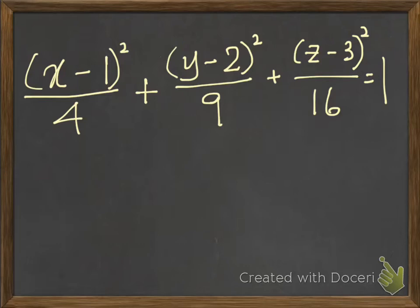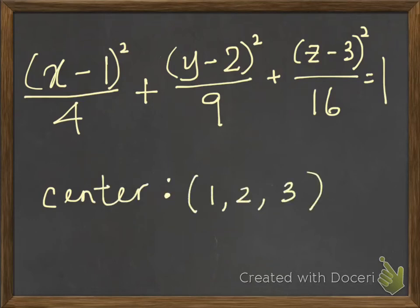And from the equation, we are able to get the center directly, that is (1, 2, 3). And then we get the value of a, which is 2, b is 3, and c is 4.